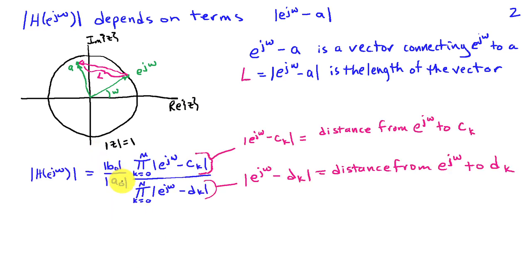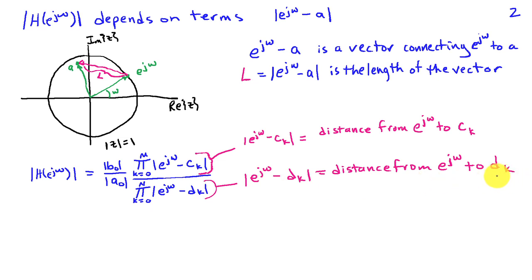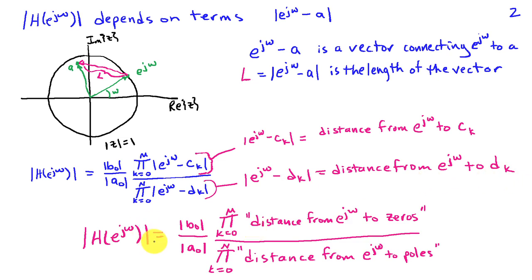So writing that out again, I've got the constant term out front — magnitude of b_0 divided by magnitude of a_0 — and then in the numerator I've got a product of terms that are the distances from e^{jω} to the zero locations, divided by the distances from e^{jω} to the pole locations. We can think about the magnitude response as the product of distances from e^{jω} to the zeros divided by the product of distances from e^{jω} to the poles.